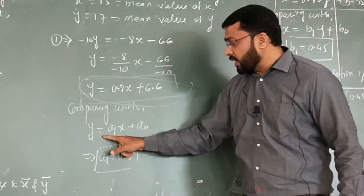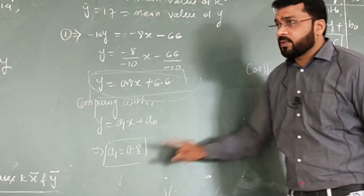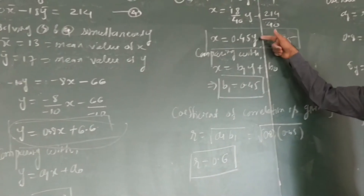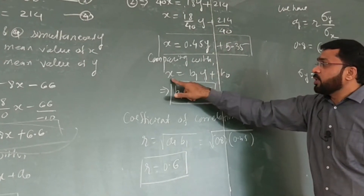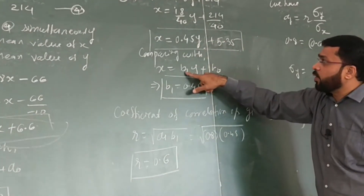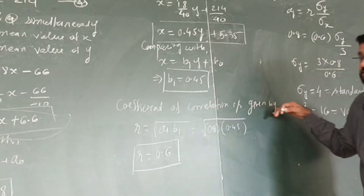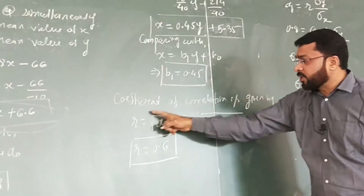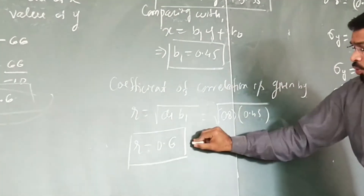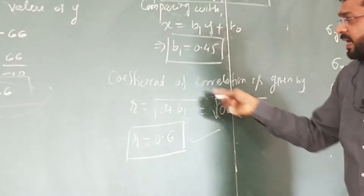Comparing with the standard form: for y-on-x, y equals a1·x plus a0, we get a1 equals 0.8. For x-on-y, x equals b1·y plus b0, we get b1 equals 0.45. The coefficient of correlation formula is r equals square root of (a1 times b1). Substituting the values and taking the square root gives the coefficient of correlation between x and y.